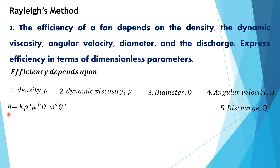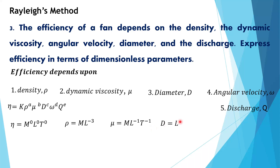Efficiency has no units, so we write M⁰ L⁰ T⁰. Density is mass by volume, so M L⁻³. Dynamic viscosity is M L⁻¹ T⁻¹. Diameter is L. Angular velocity is revolutions per unit time, so T⁻¹. Discharge is meter cube per second, so L³ T⁻¹.